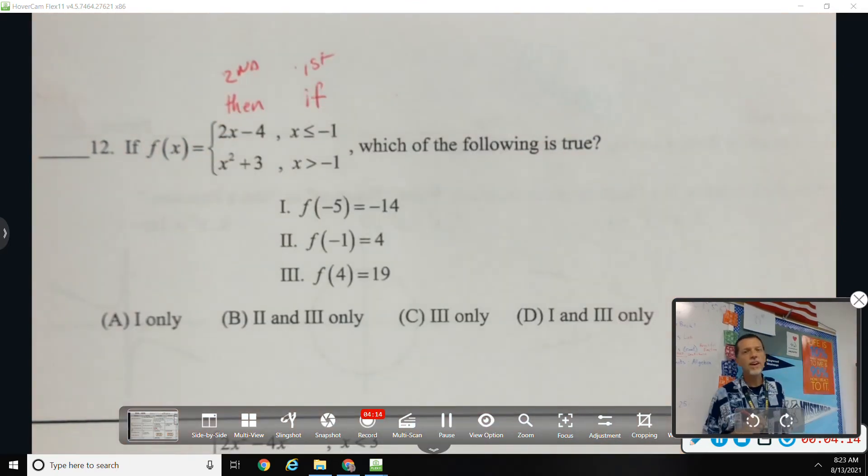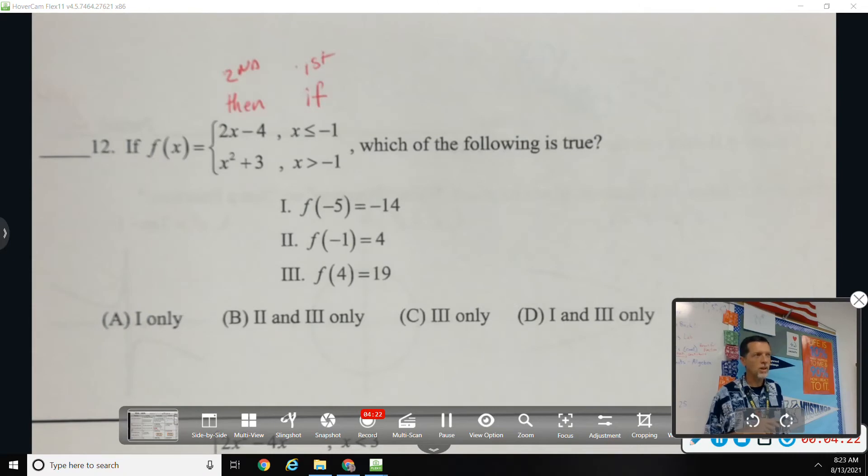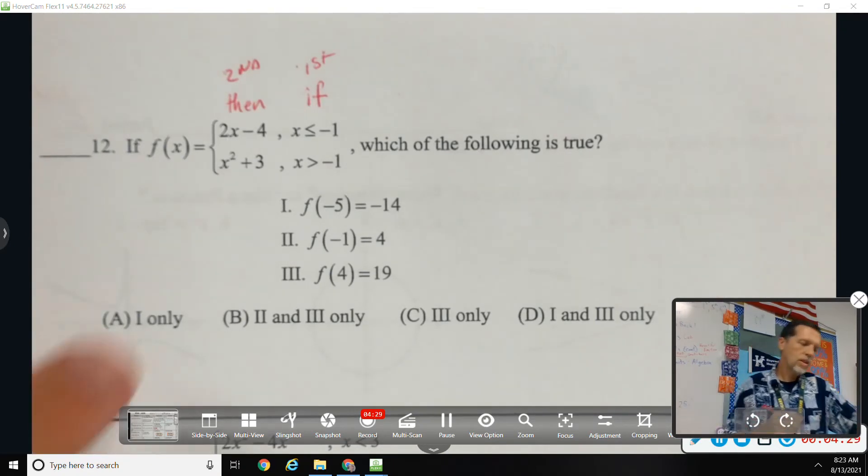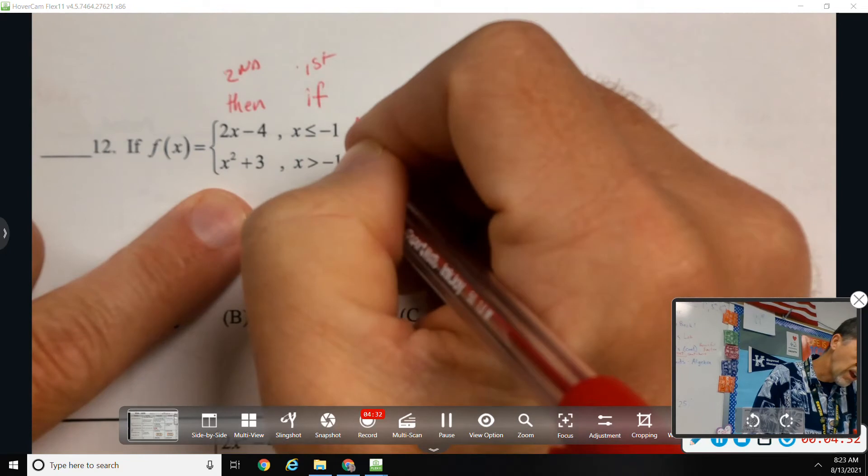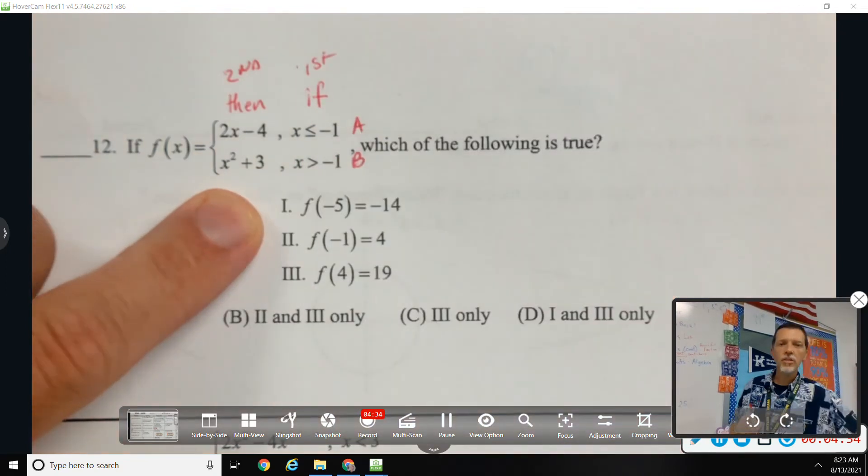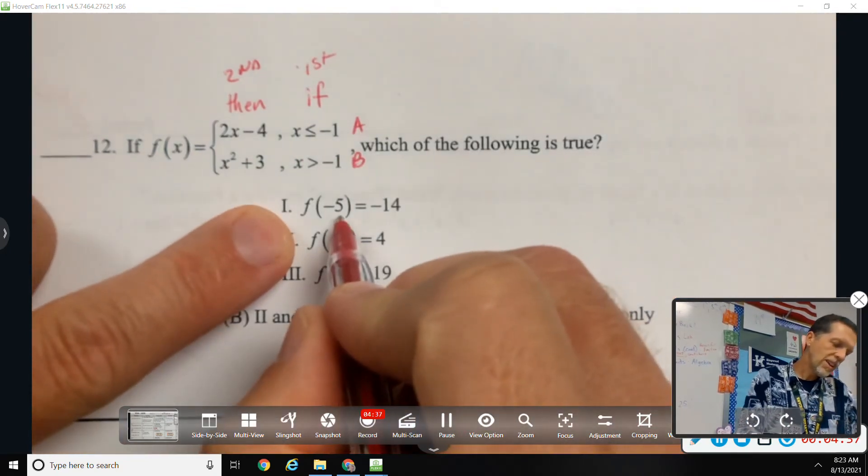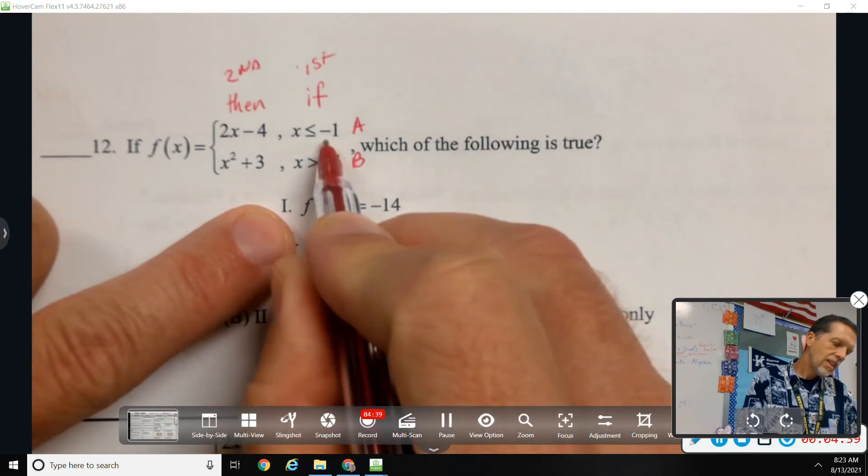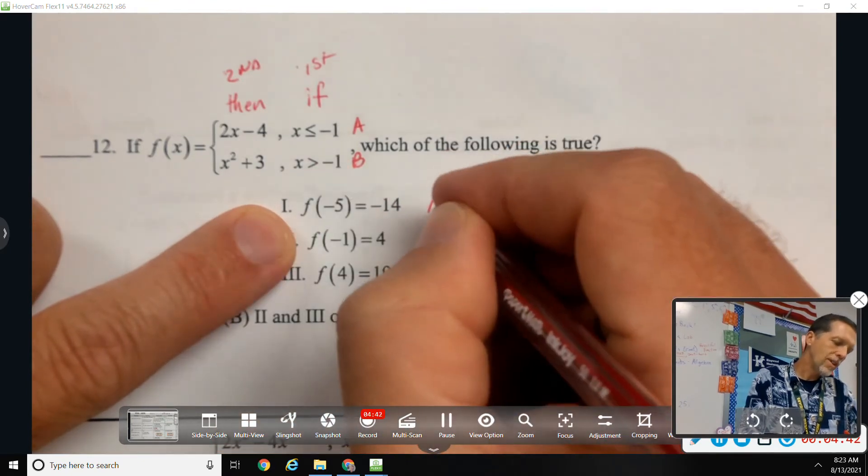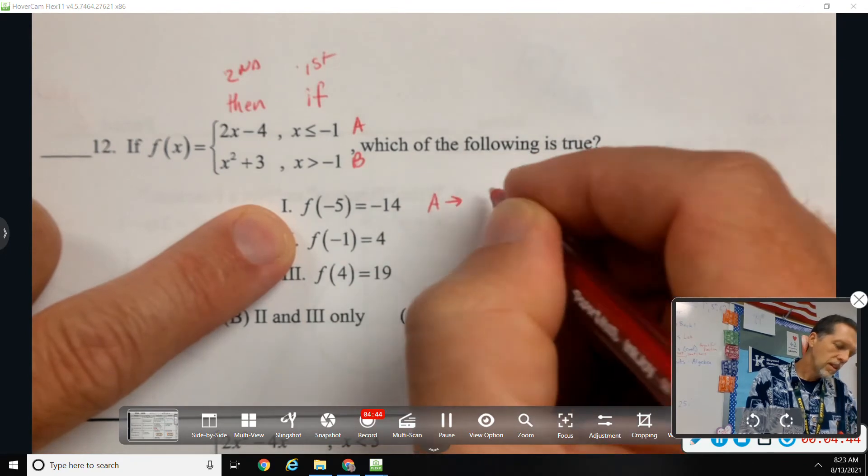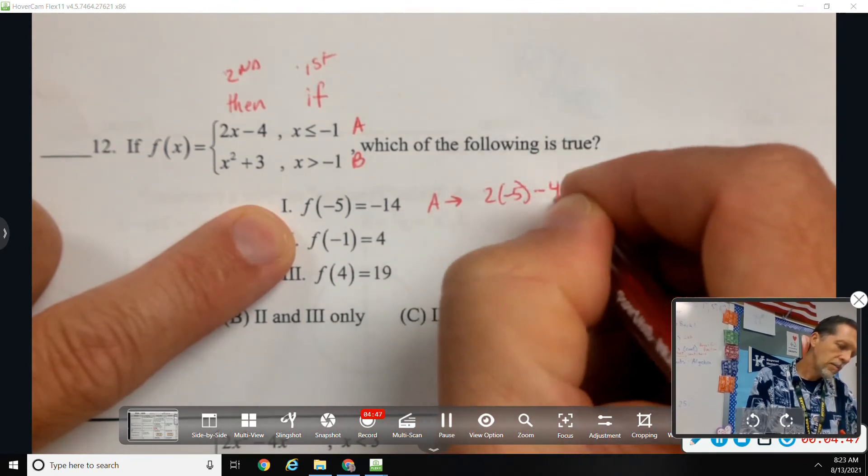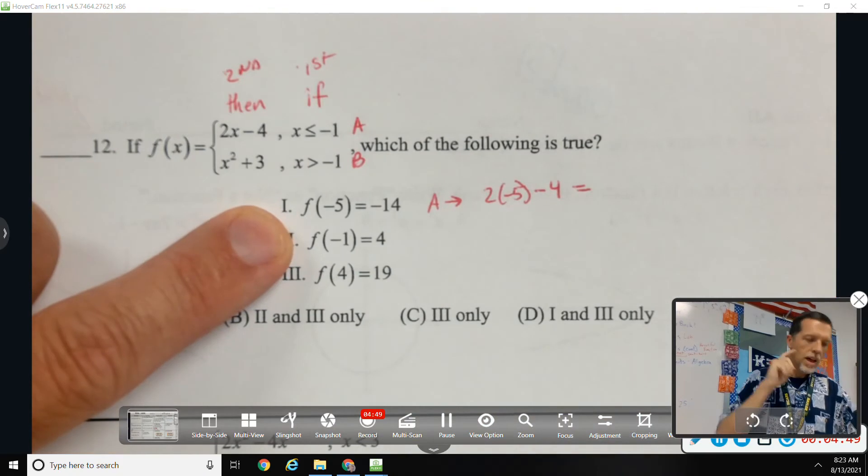This is the 'if' column and then this is the 'then' column. So if x is less than negative 1, then we'll use 2x minus 4. If x is greater than negative 1, then we use x squared plus 3. But we only pick one path. I'm going to call this branch a and this branch b. So if x is negative 5, that's less than negative 1, so we're going to use branch a for this one. So 2 times negative 5 minus 4, that would be negative 14.